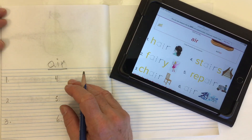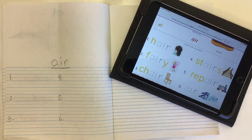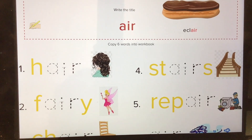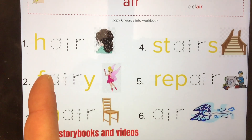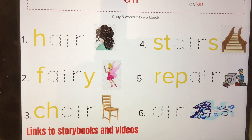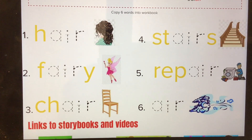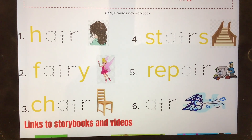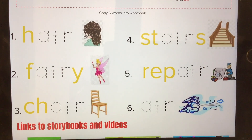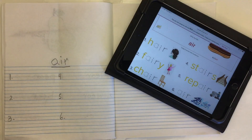A-I-R often comes in the middle or the end of a word. Let's take a look at some words that have 'air' in them — we can have a yummy treat like a chocolate eclair. We have words like hair, fairy, chair, stairs, repair, or all by itself: air, like wind.